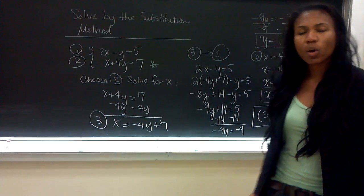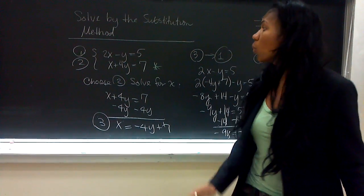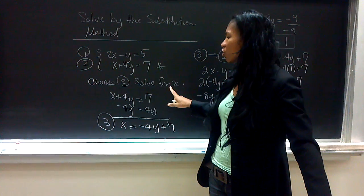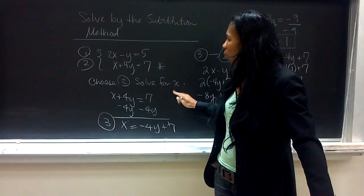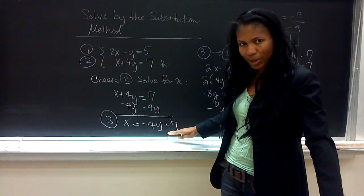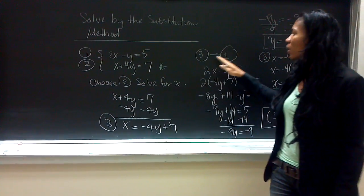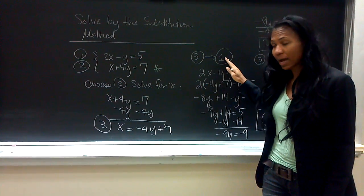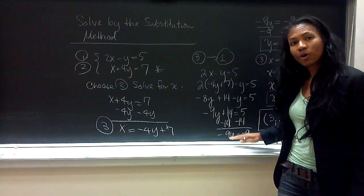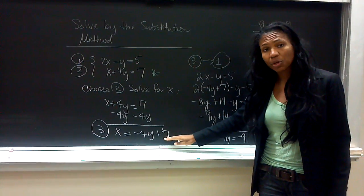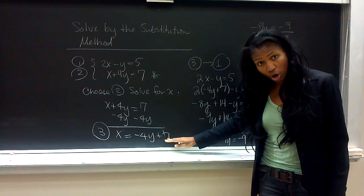So, once again, what we want to do for the substitution method is we want to number our problems, pick an equation, solve for a variable, and once we solve for a variable, we call our result equation 3. We now put equation 3 into the equation that we haven't manipulated yet. We solve for a variable. Once we get our result, we place it back into equation 3 to find out our other variable.